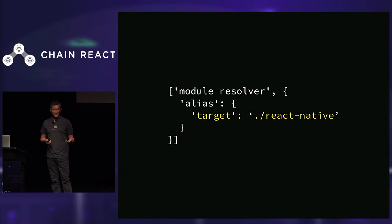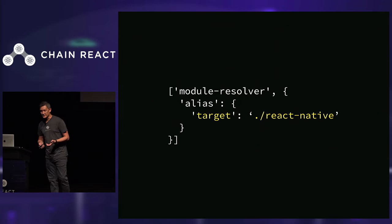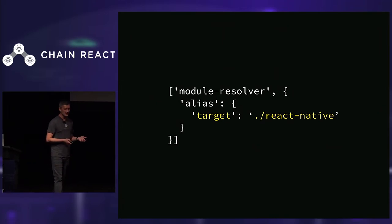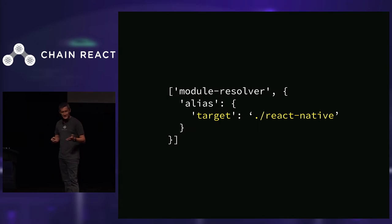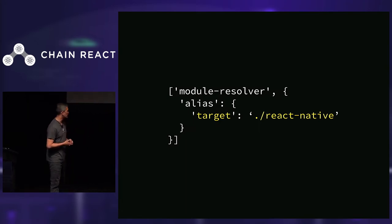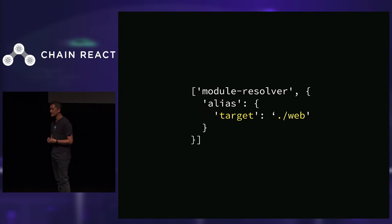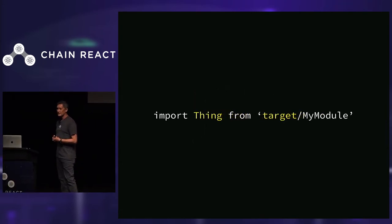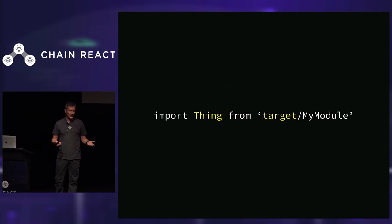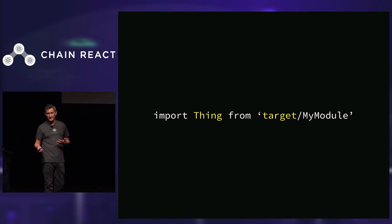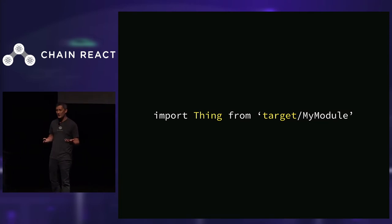Now let's talk about how we're configuring Babel to let these folders work together. Here's an example of our .babelrc file for our React Native target — we've defined a target alias that points at our React Native folder. For the web, we do the exact same thing: a target alias pointing at our web folder. Now our shared code can import a thing from 'target', and depending on what target you're compiling for, you'll get the right thing.